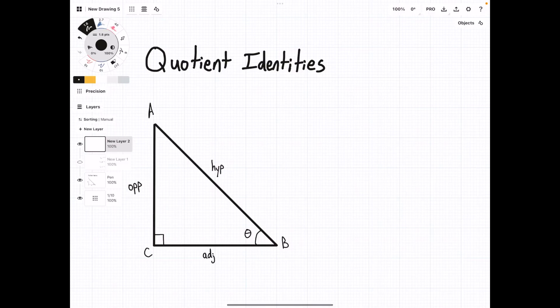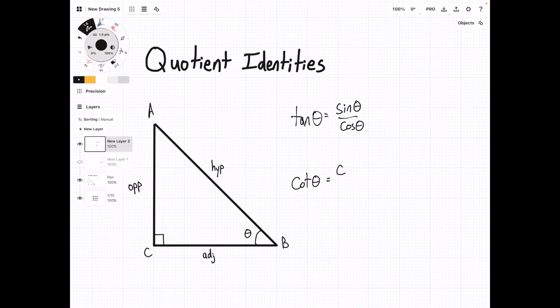In this video, I'm going to talk about the quotient identities in trigonometry. Basically, what they are is tan θ equals sin θ over cos θ, and cot θ is equal to cos θ over sin θ. And that's it.